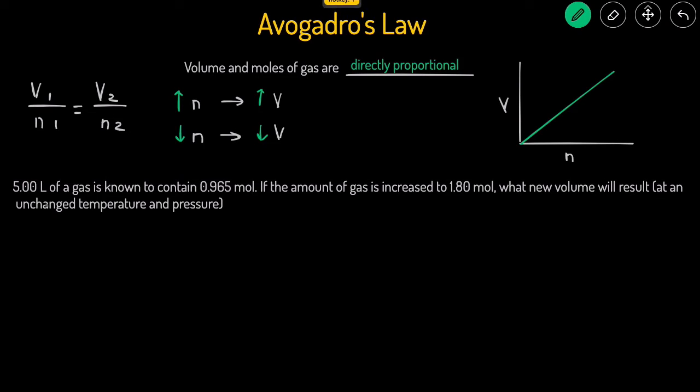This is how a problem will look like. 5 liters of a gas is known to contain 0.965 moles. If the volume of gas is increased to 1.8 moles, what is the new volume? So here we have a change in moles, and we want to figure out what the final volume would be.